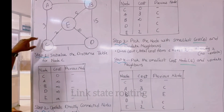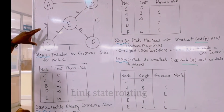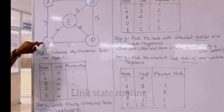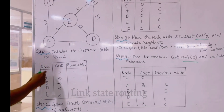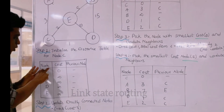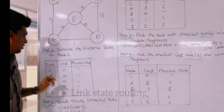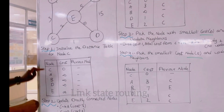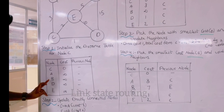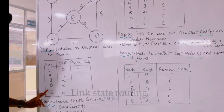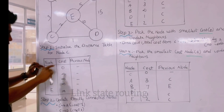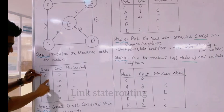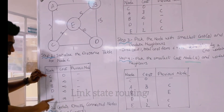We start from step 1. First we have to initialize the distance table. For node C, we have to initialize the distance table that consists of node, cost, and the previous node. So what are the nodes available here? A, B, C, D, and E. So we are calculating for node C, so we have written node C first, then A, B, D, and E.